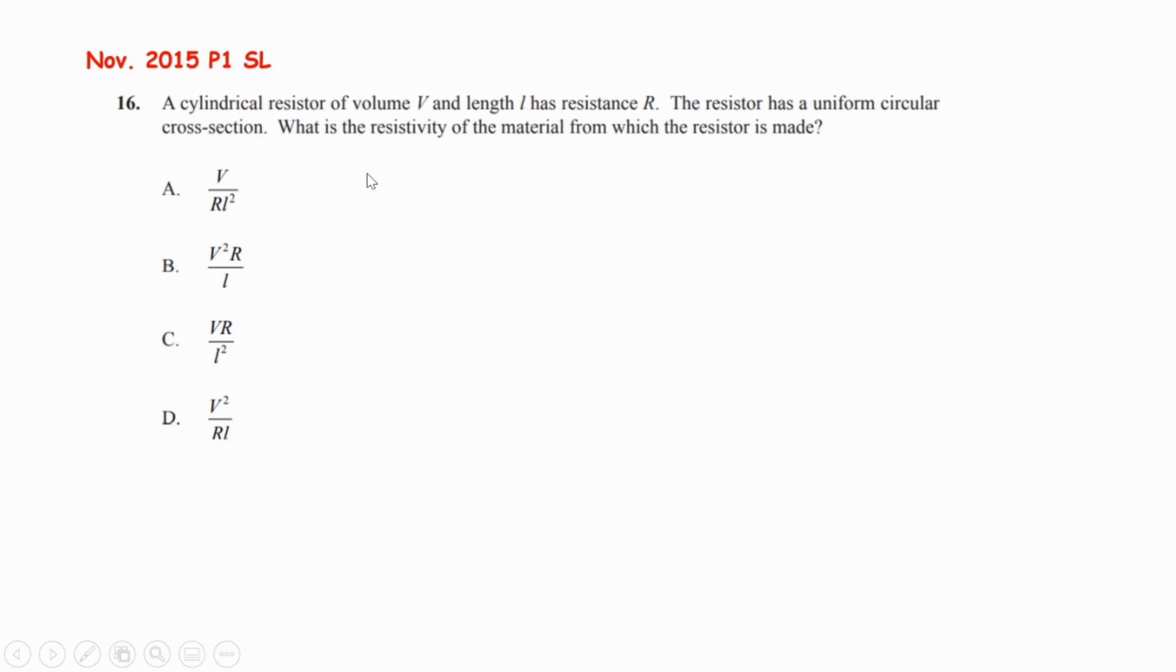The formula linking the resistance with the resistivity, length, and cross-sectional area is: R equals resistivity rho times L length divided by the cross-sectional area A.